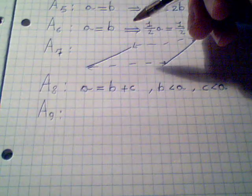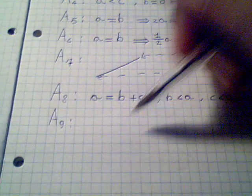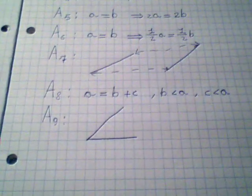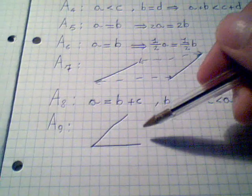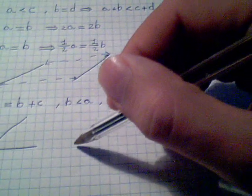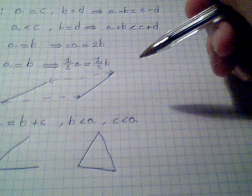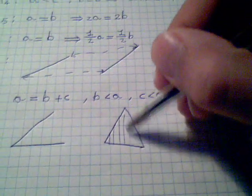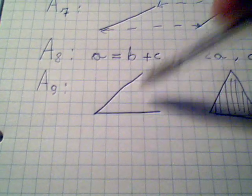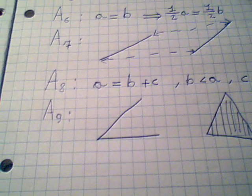Axiom number 9 says that two lines cannot cover a surface. I mean, that if I have two lines, there will be no surface between them. Never. Maybe with three lines, I can make a triangle, and there will be a surface inside the three lines. Inside two lines, there will be no surfaces. Okay? And that's all with axioms.